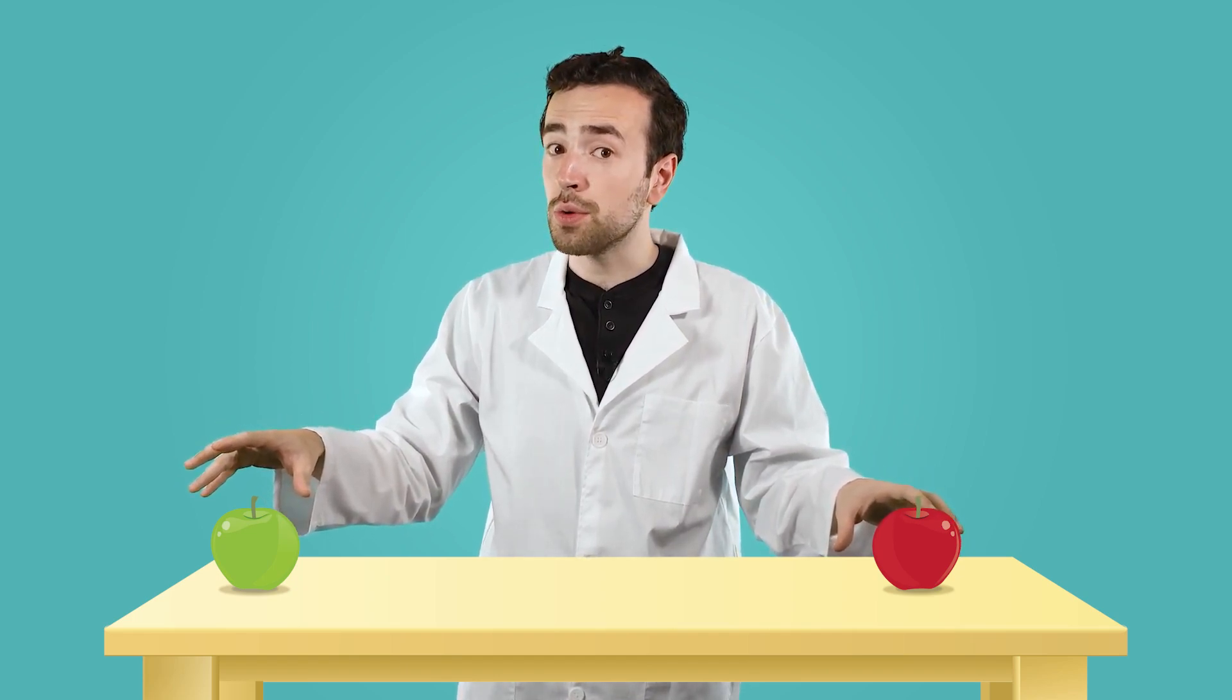Let's use our senses to investigate. With my sense of sight, I can see that this apple is red and this apple's green. They're also about the same size and shape. With my sense of touch, I can feel that they're the same texture, very smooth. I can smell that they both smell fresh and fruity.